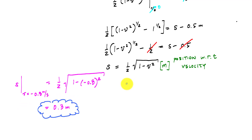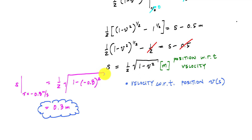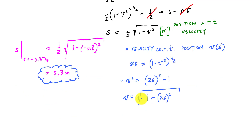If I had wanted velocity with respect to position, v of s, it's just a simple algebraic manipulation — solve for v in terms of s from the same equation.